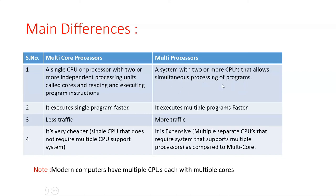In multi-core, there are cores; in multi-processor, there are separate processors. A second difference is that multi-core executes a single program faster — one single program is executed across different cores, so it can execute that single program quickly.